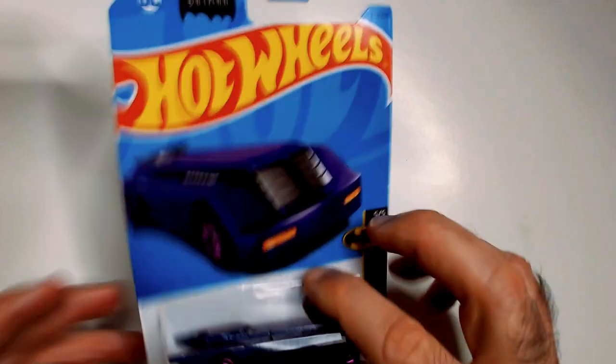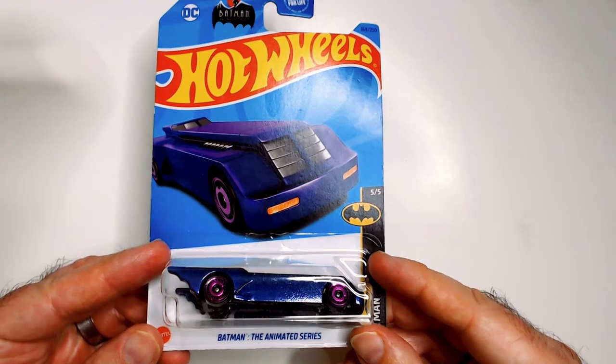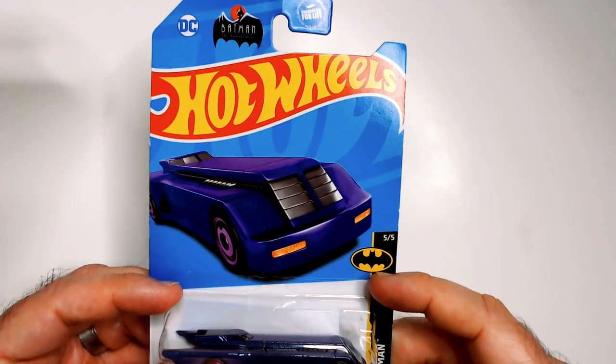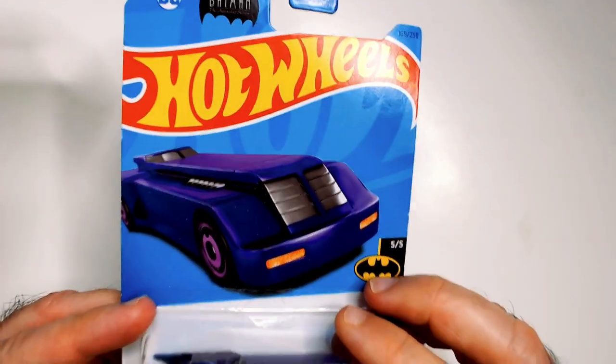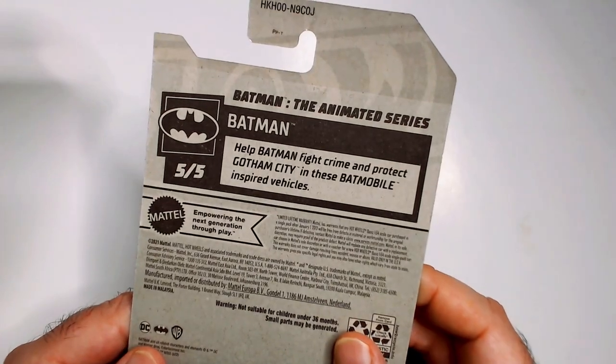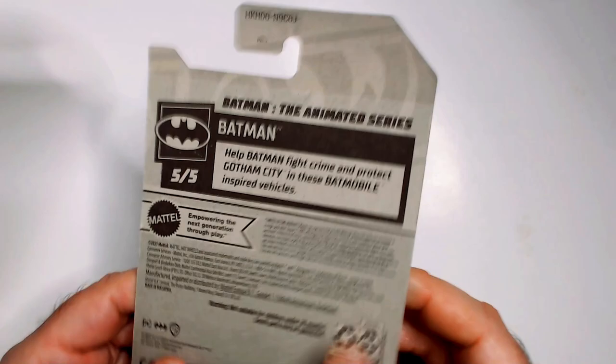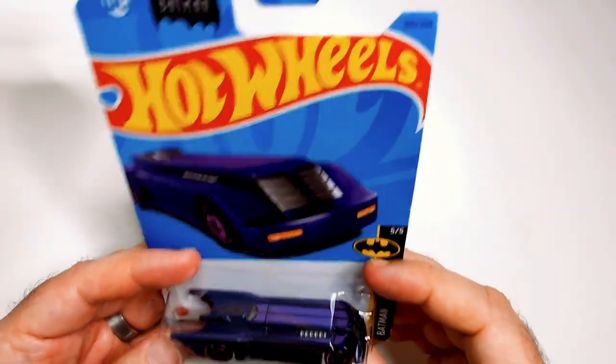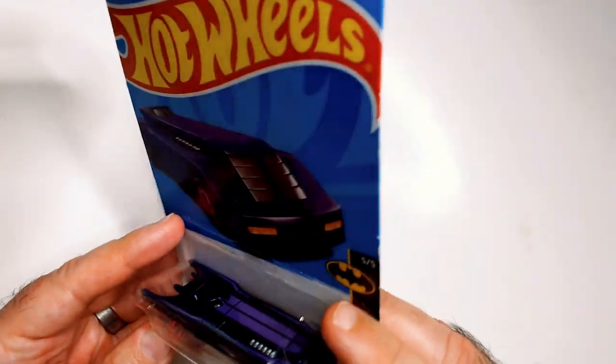Welcome back to Blar. We have a Hot Wheels Batmobile, Batman from the Animated Series, 5 out of 5. It's purple with purple wheels. So Batman inspired vehicles, they just changed the color on the Animated Series Batmobile here into like...